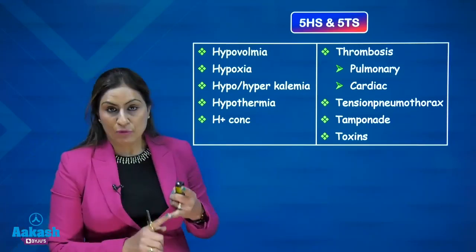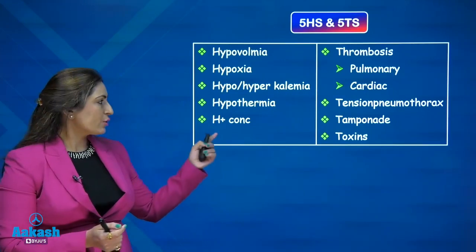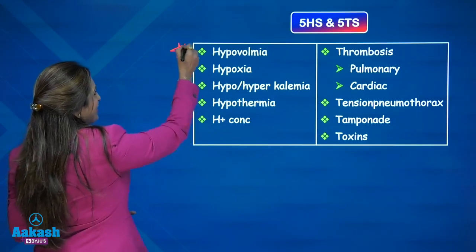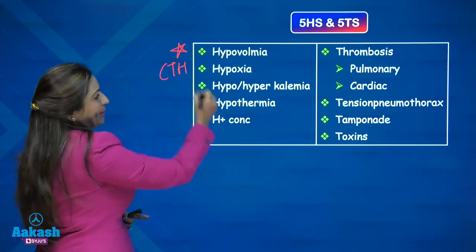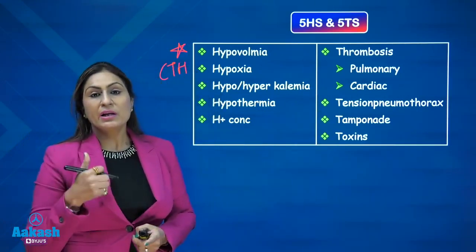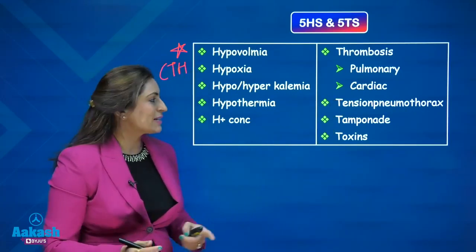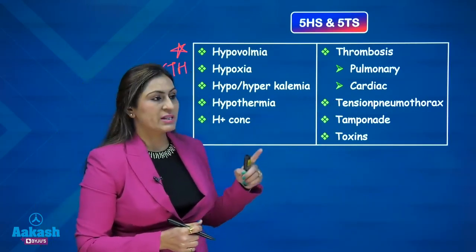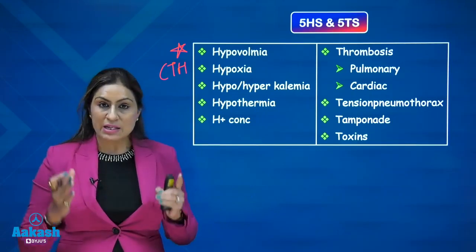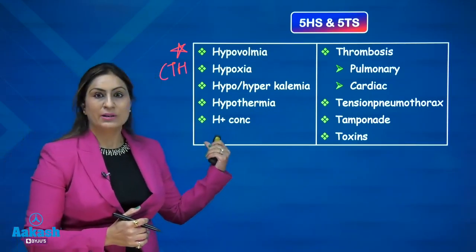The five H's are: hypovolemia, hypoxia, hypo- or hyperkalemia, H-ion concentration (acidosis), and hypothermia. The five T's are: thrombosis (pulmonary thrombosis or myocardial infarction — cardiac thrombosis), tension pneumothorax, cardiac tamponade, and toxins. All of these are reversible causes of cardiac arrest. As the team leader of the ACLS team, it is our duty to enquire about all of these.